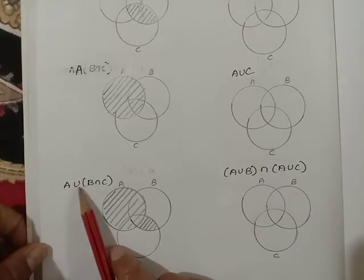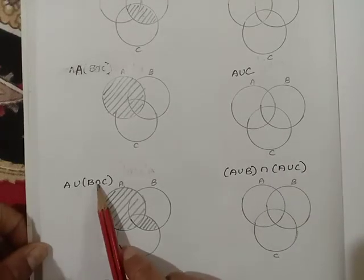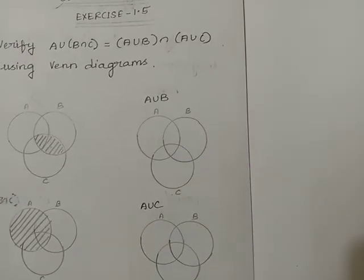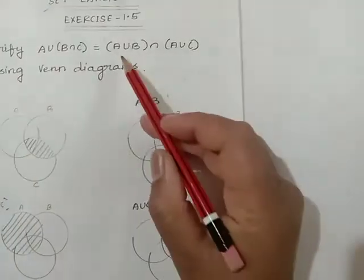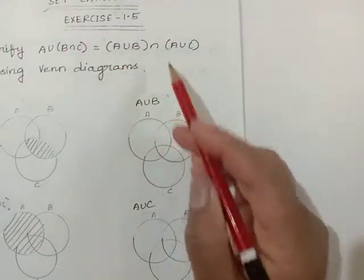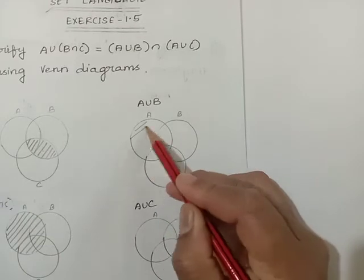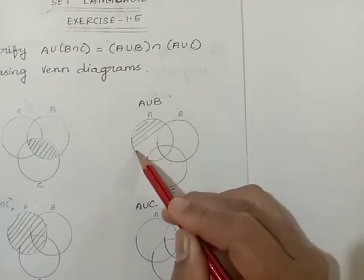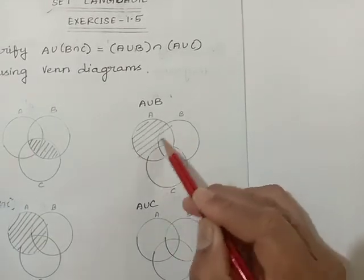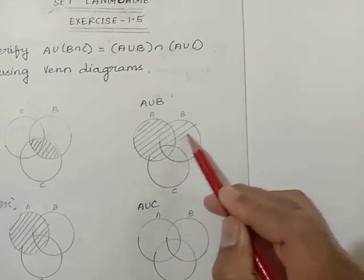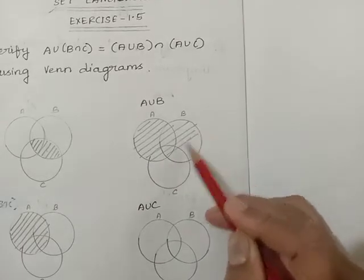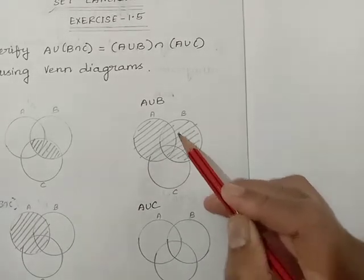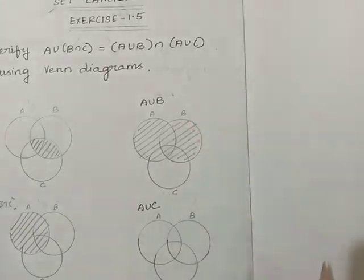Now we are going to find the right hand side: A union B. A union B means we need the portion of A and we need the portion of circle B. So that is A union B.